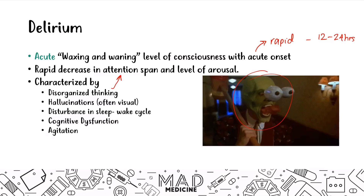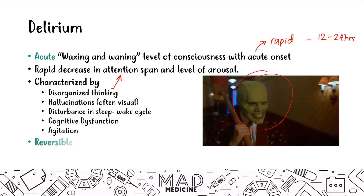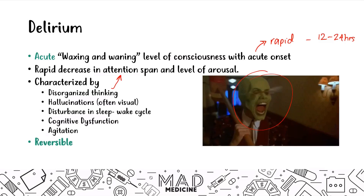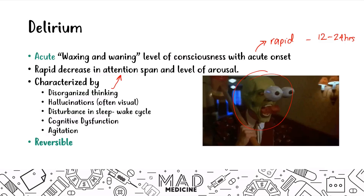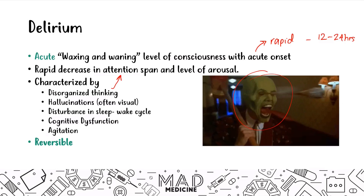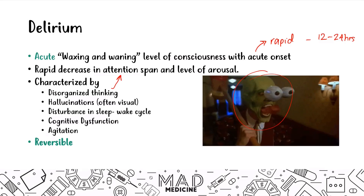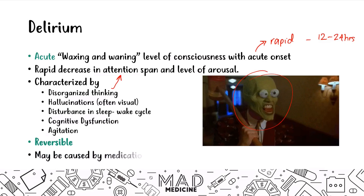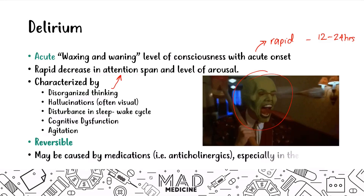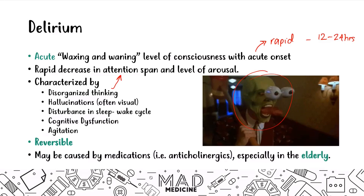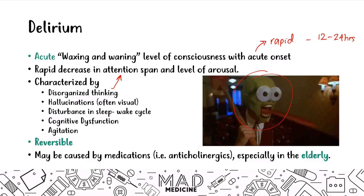An important thing to realize about delirium is that it is reversible — unlike dementia, which is not reversible. If you treat the underlying cause of delirium, you can get rid of it. This could be caused by medications as well; for example, giving elderly patients anticholinergics, especially at high doses, can cause delirium.